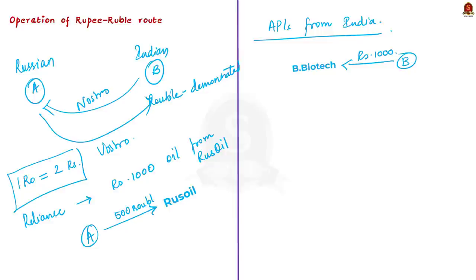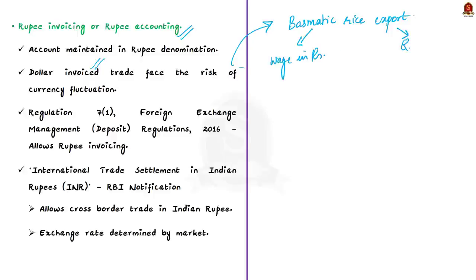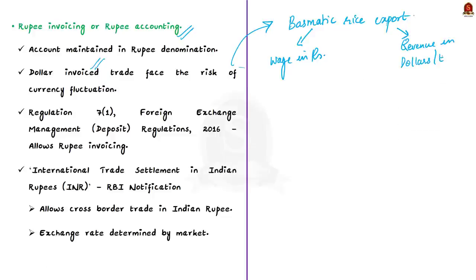Now let me come to another term — rupee invoicing, also called rupee accounting — which means maintaining your accounts in rupee denomination. At present, most international trade from India is dollar-invoiced. But there is an issue with dollar invoicing. Assume you are India's leading basmati rice exporter. Your costs — wages and salaries — are domestic and thus rupee-denominated. But your customers are mostly abroad in the USA and Europe, so your revenues are in dollars and euros. The Indian side is rupee-invoiced while the export side is dollar-invoiced.